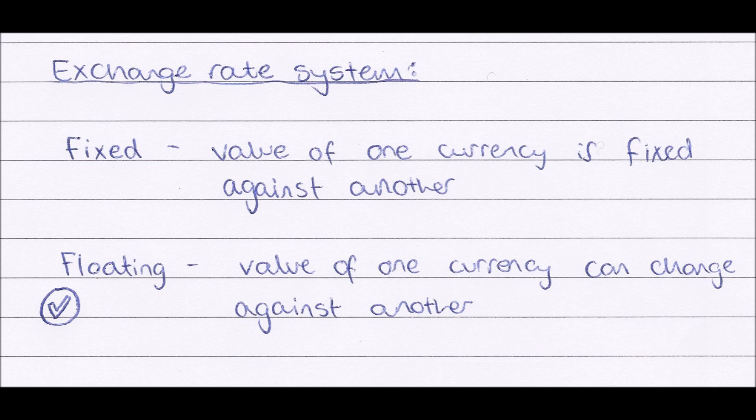The next thing you need to know about exchange rates is that we have two types of exchange rate system. Firstly, we have a fixed exchange rate system, where the value of one currency is fixed against another, so it cannot change. Using our earlier example, the British and American governments would agree that one pound equals one dollar twenty, and this cannot change at all.